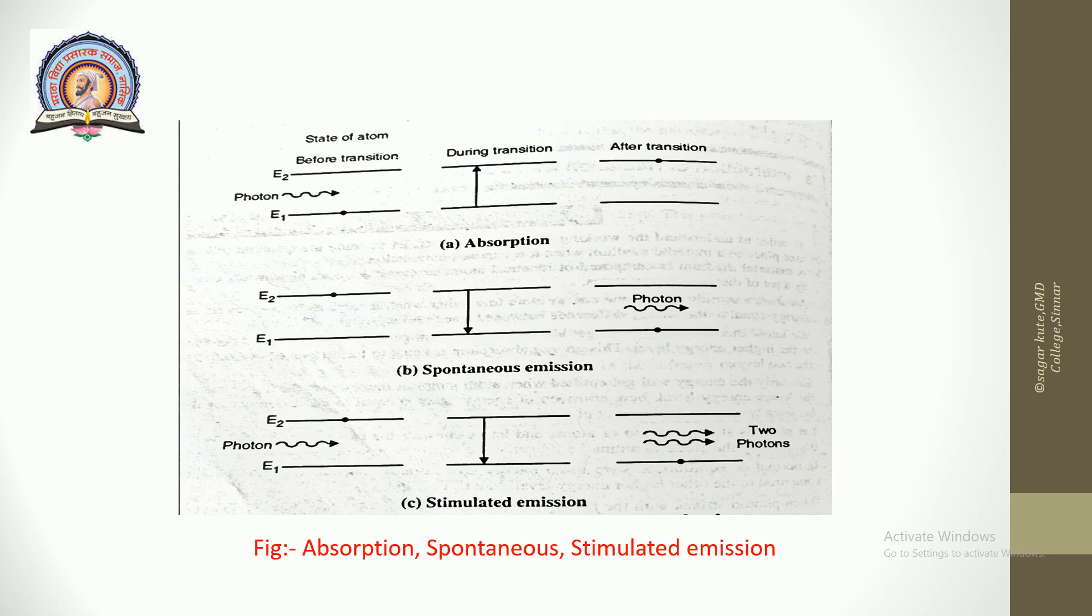Now third one is stimulated emission. When an atom is at excited level E₂, then an external photon incident with the same energy stimulates the atom to transition to the lower energy level. During this transition, the atom emits a photon with the same energy as the energy of the incident photon. This type of emission is called stimulated emission. Stimulated emission is coherent with the stimulating incident radiation.